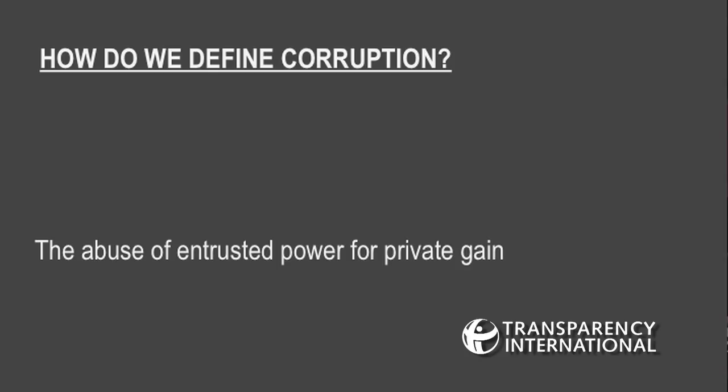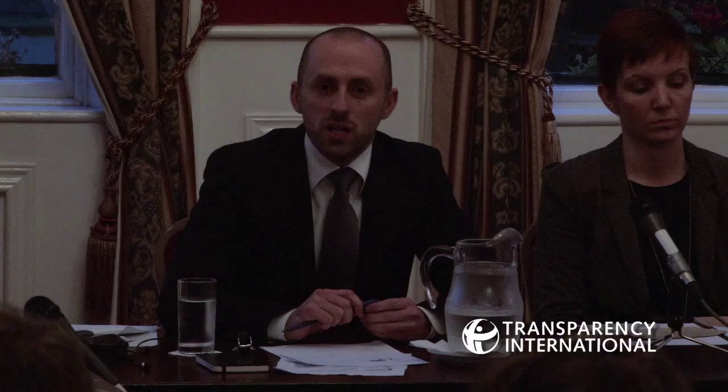How do we define corruption? We define corruption as the abuse of entrusted power for private gain. It's a very broad definition — it covers both legal and illegal forms of corruption. It doesn't necessarily follow that one has to break a law to be corrupt. The Corruption Perceptions Index is a poll of polls which measures business perceptions of the abuse of public office for private gain. The definition used for the CPI is not identical to the one TI uses more generally, partly because of the data available. We use up to 13 different surveys from independent agencies and think tanks, such as the Economist Intelligence Unit and the World Economic Forum.